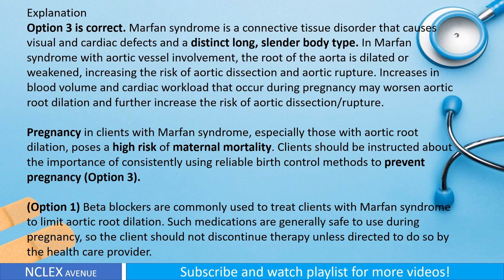Marfan syndrome is a connective tissue disorder that causes visual and cardiac defects and a distinct long, slender body type. With aortic vessel involvement, the root of the aorta is dilated or weakened, increasing the risk of aortic dissection and rupture. Increases in blood volume and cardiac workload during pregnancy may worsen aortic root dilation and further increase the risk of aortic dissection or rupture. Pregnancy in clients with Marfan syndrome — especially those with aortic root dilation — poses a high risk of maternal mortality. Clients should be instructed about consistently using reliable birth control to prevent pregnancy. Option one: Beta blockers are generally safe to use during pregnancy and should not be discontinued unless directed by the health care provider.